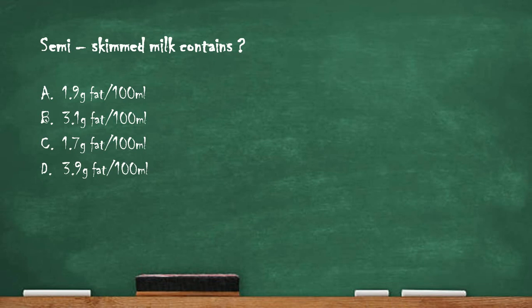Next question: semi-skimmed milk contains — option A: 1.9 gram of fat per 100 ml. Option B: 3.1 gram fat per 100 ml. Option C: 1.7 gram fat per 100 ml. Option D: 3.9 gram fat per 100 ml. The right answer is option C — 1.7 gram fat per 100 ml.